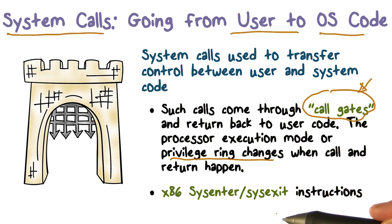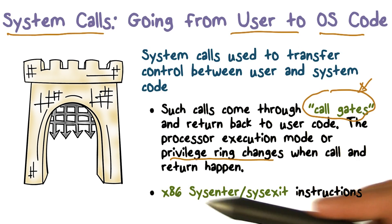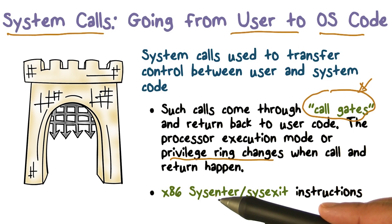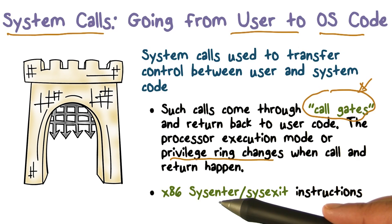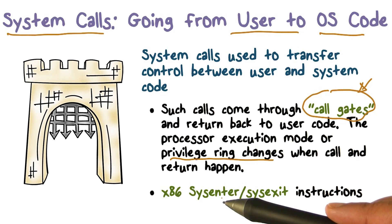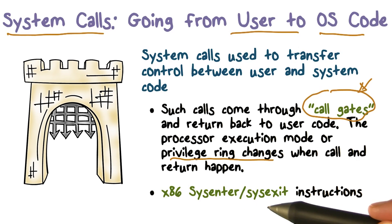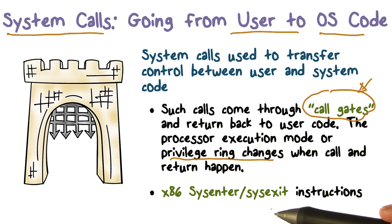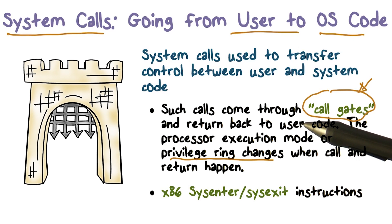This used to happen through an interrupt or a trap into the system from user mode. But in x86, we actually have explicit instructions. This is different from your regular call and return. There is an instruction called sysenter to enter the operating system, and when you're done, you return by doing another special instruction called sysexit. So these instructions help you implement the system call mechanism.